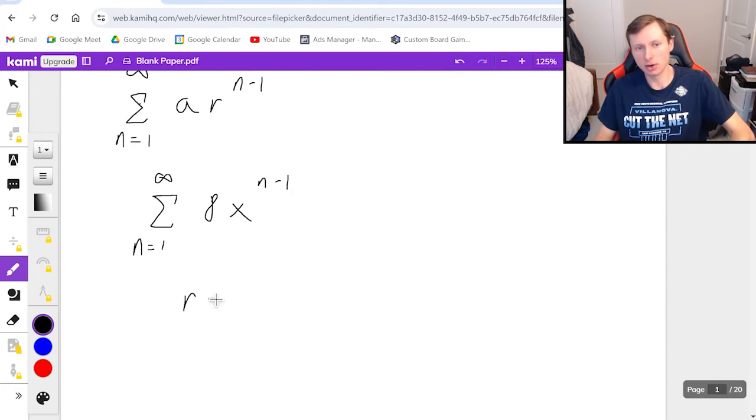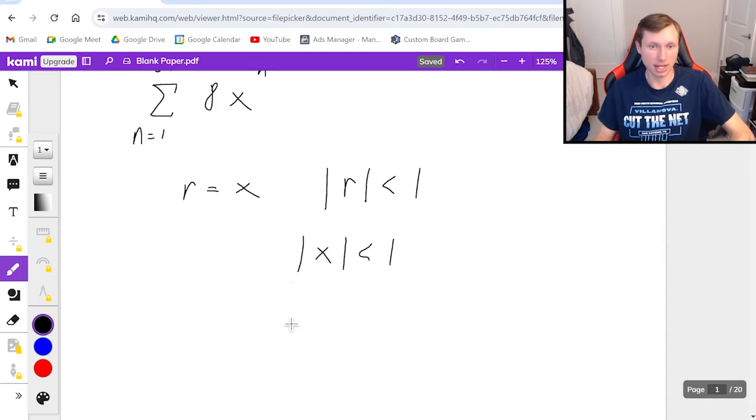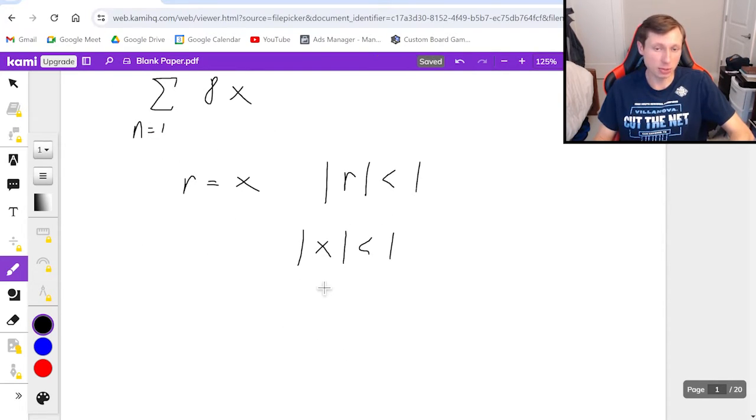All I have to do is say r is x. And the absolute value of r has to be less than 1. So in this case, the absolute value of x must be less than 1. And then whenever I want to get rid of this absolute value sign, I'm going to sandwich it in between negative 1 and positive 1, like this.